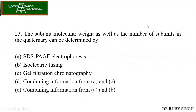The subunit molecular mass as well as the number of subunits in a quaternary structure can be determined by SDS-PAGE combined with gel filtration chromatography. In SDS-PAGE you get the molecular weight, but to find the number of subunits in a quaternary structure, you also need gel filtration chromatography. For a homodimer or homotetramer, you would get only a single band in SDS-PAGE. So option D — SDS-PAGE electrophoresis plus gel filtration chromatography — is the correct answer.